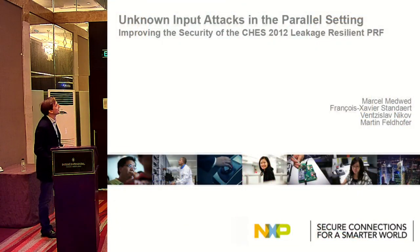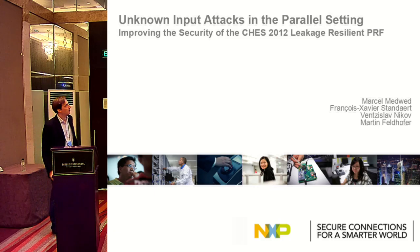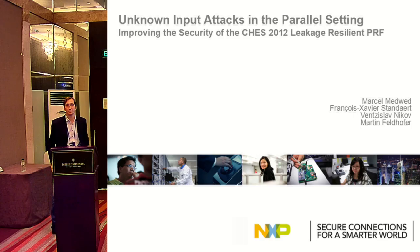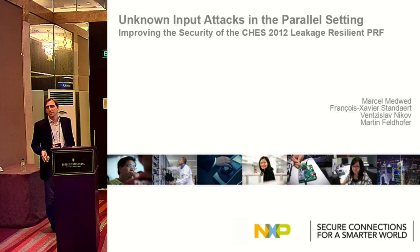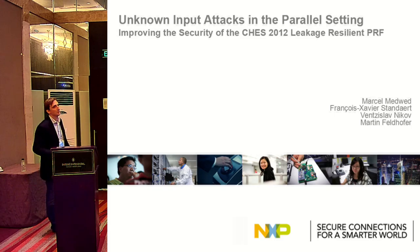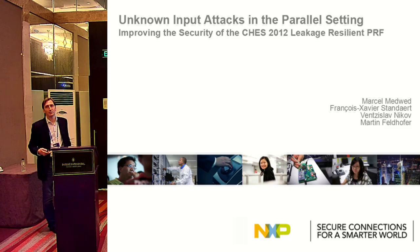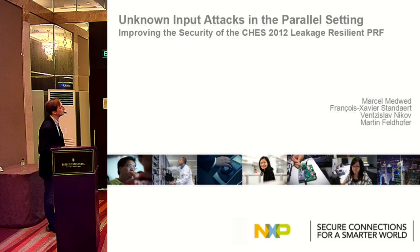Today I want to speak about how to improve on the CHESS 2012 Leakage Resilient PRF — not only improving the security, but also lowering the requirements. With our implementation it is possible to implement it with a plain parallel AES implementation, which was not possible before, while keeping the same performance.